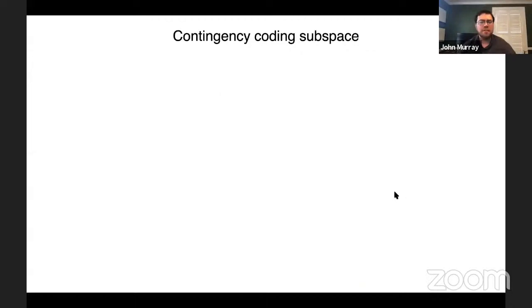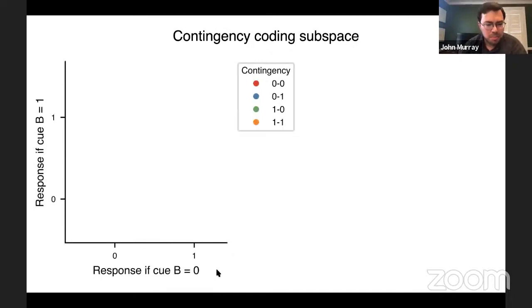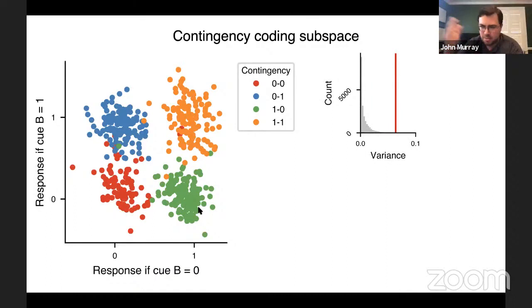Does the network adopt a contingency-based strategy as opposed to a sensory strategy? To test this, a subspace was identified within the 200-dimensional neural activation space that explicitly contains the contingency signal, set up as a regression problem to define axes in terms of contingency, then projecting neural activity into that space. The result is a nice two-dimensional linear subspace in which individual trials cluster according to which contingency state they belong to. The amount of neural variance captured in this subspace is highly preferential compared to random directions — substantial neural activity is represented within the contingency subspace.